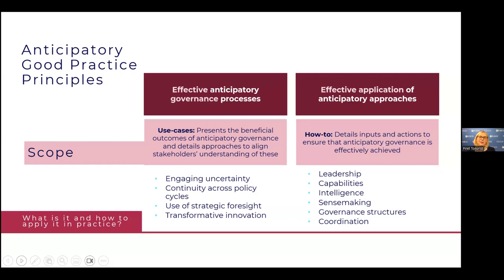At the OECD, my colleague Peter from the Flemish government will tell you more about what we have done in the government of Flanders. The OECD is currently working on anticipatory good practice principles — how to build a governance system that will allow you to use strategic foresight most effectively. We are looking at the most effective anticipatory government processes: how to engage with uncertainty, ensure continuity across policy cycles, use strategic foresight and transformative innovation, and develop capabilities including leadership knowledge, intelligence, sensemaking, and governance structures.